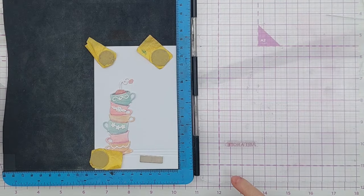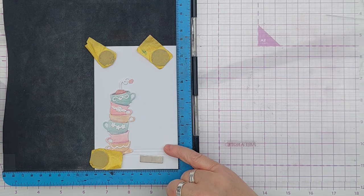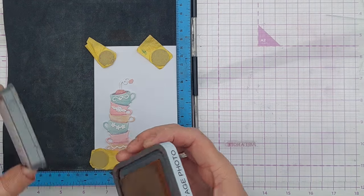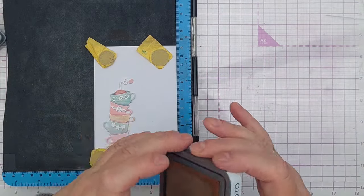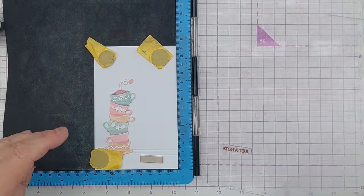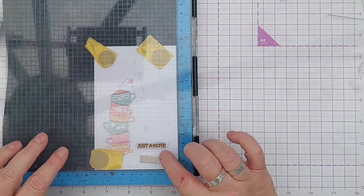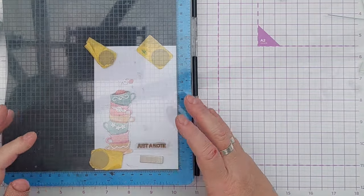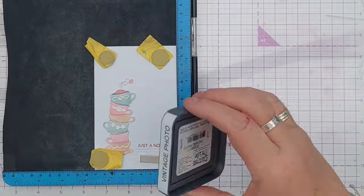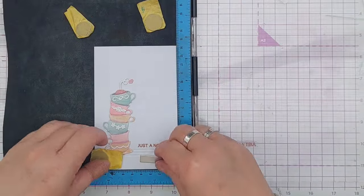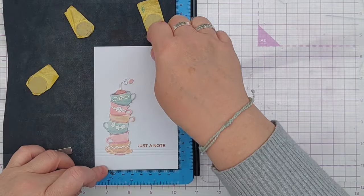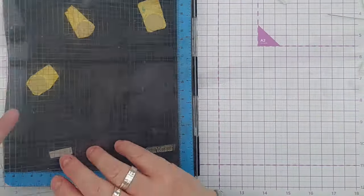For my sentiment I've got a just a note stamp that I'm going to add about here. And I'm going to use vintage photo. I did think about black, but I don't want to introduce black. So I'm going to go with a coffee color I think. Yep. Happy with that. Now I can stick this on my card blank.